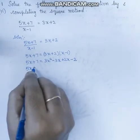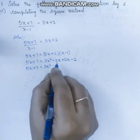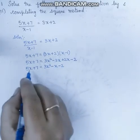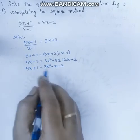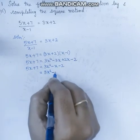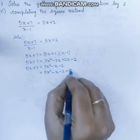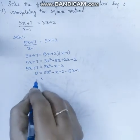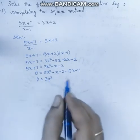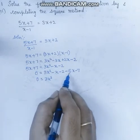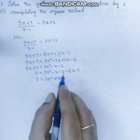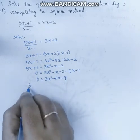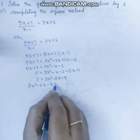Combining these terms: 5x plus 7 is equal to 3x square minus 3x plus 2x minus 2, which simplifies to 3x square minus x minus 2. Now I bring all the left-hand side terms to the right-hand side: 3x square minus x minus 2 minus 5x minus 7 equals 0, giving us 3x square minus 6x minus 9 is equal to 0.